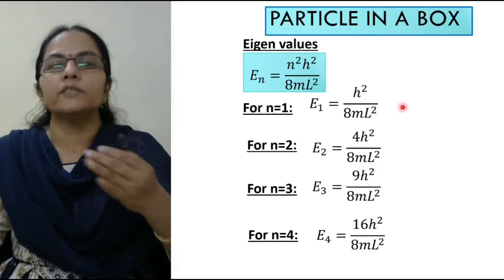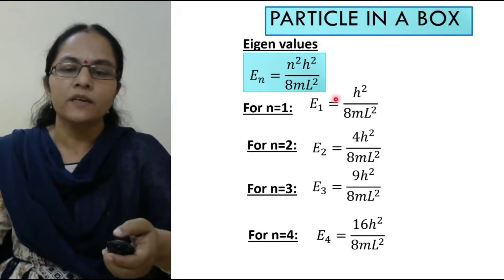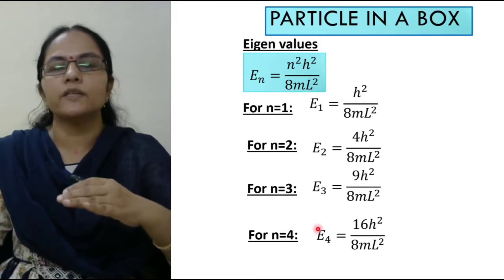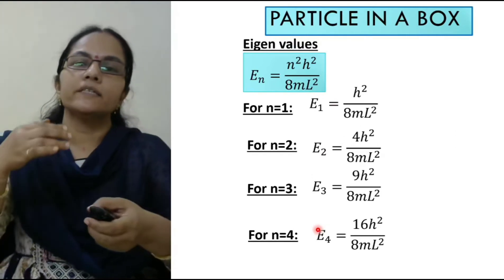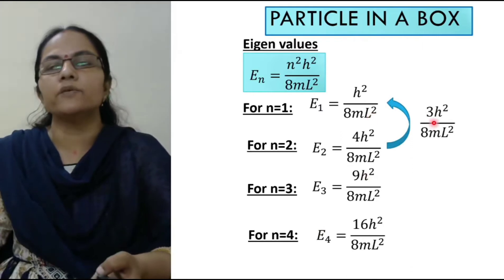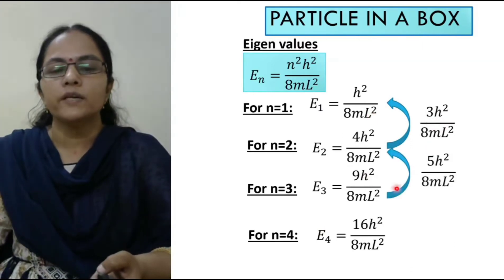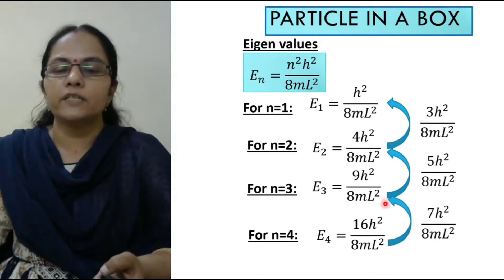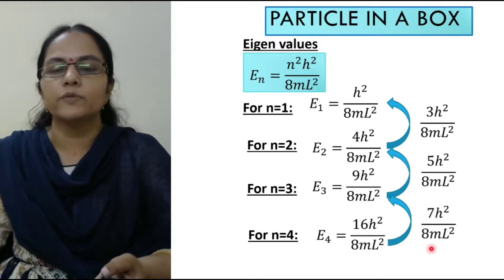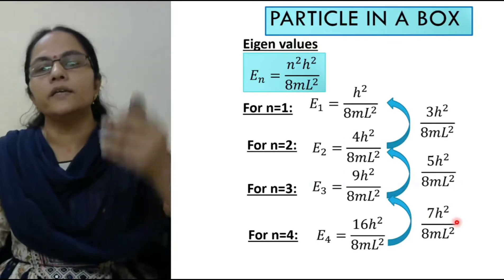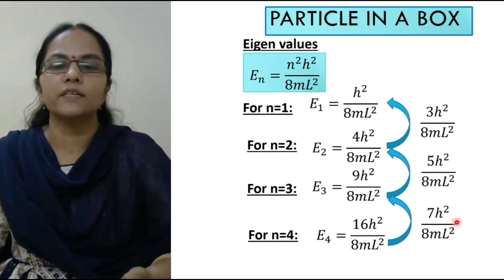Now we will see the difference between two consecutive energy levels. The difference between E2 and E1 is 3h² by 8mL². The difference between E3 and E2 is 5h² by 8mL². The difference between E4 and E3 is 7h² by 8mL². The value is increasing as we go higher and higher. Let us see this in a graphical manner.